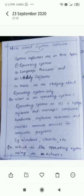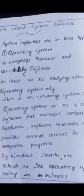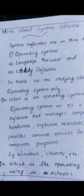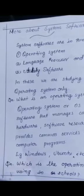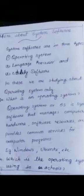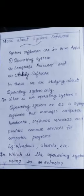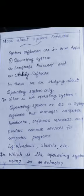More about system software. System software is of three types: operating system, language processor, and utility software. In these, we are studying about operating system only. System software can be divided into three types, and one of them is operating system. This is what we are studying now, and the other two divisions we can study in higher class.